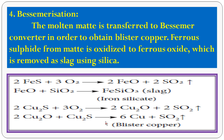Now balance the last equation: there are 2 copper on one side, so put 2 on the other side. Check: there are 4 copper total, put 2 copper here. This gives 98% copper and 2% impurities in blister copper.